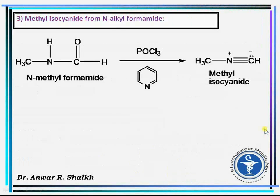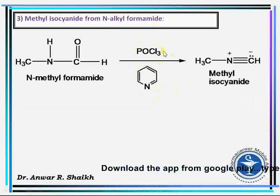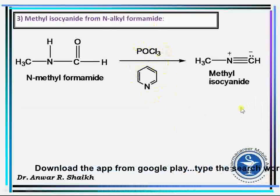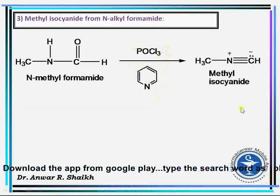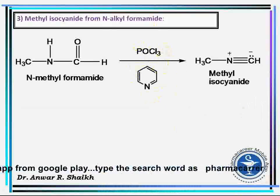The third method of preparation of isocyanides uses N-alkyl formamide in the presence of thionium and phosphorus trichloride, which gives methyl isocyanide.